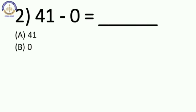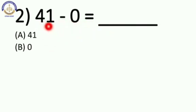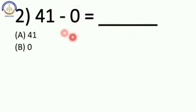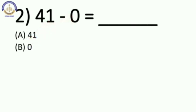Very good. Now second: 41 minus 0 is equal to blank. When we subtract 0 — hum jab 0 minus karte hain, to humein kya milta hai? The number itself. Same number. So our answer will be 41. Answer is option A, 41.